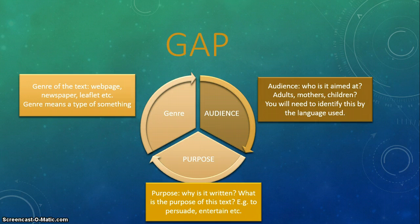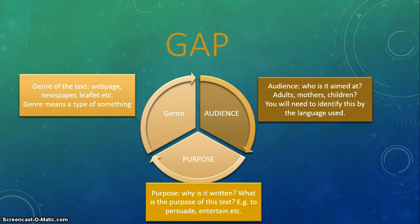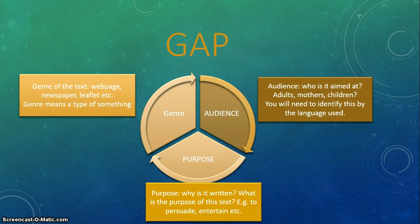The last element is purpose — why is it written? What is the purpose of this text? For example, a newspaper might be written to persuade you, or a leaflet written to inform you about a new doctor's practice. You can include that in your answer. GAP stands for genre, audience, and purpose, and you know how to use it. If you don't, feel free to email me or leave a comment.